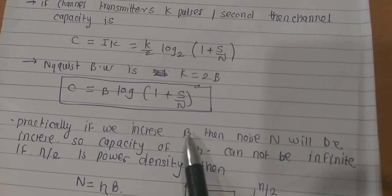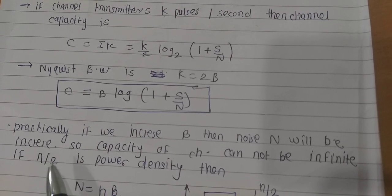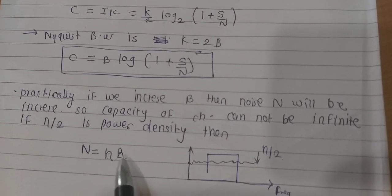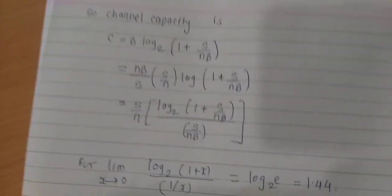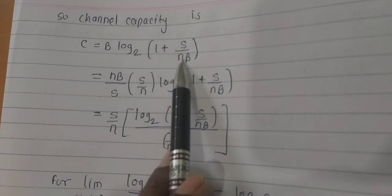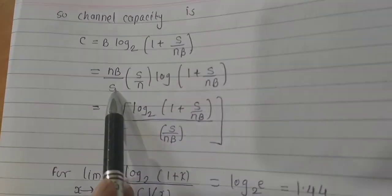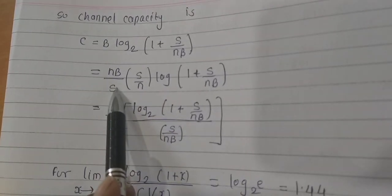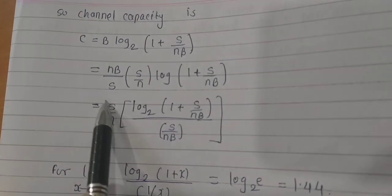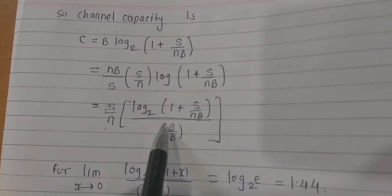Practically, if you increase the bandwidth, noise also increases, so channel capacity cannot be made infinite. If the power spectral density is η/2, the noise power N = ηB. Substituting this into the channel capacity formula gives C = B log₂(1 + S/(ηB)), and factoring out S/η yields C = (S/η) log₂(1 + S/(ηB)).